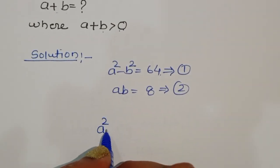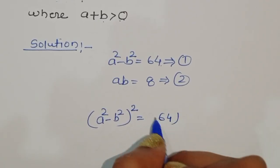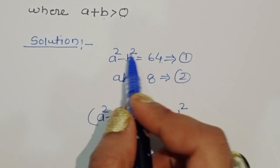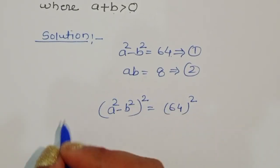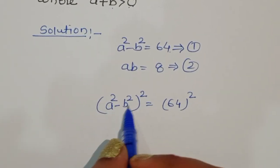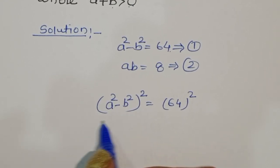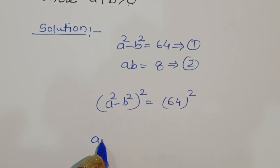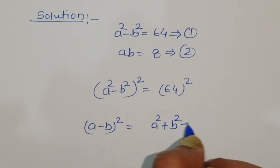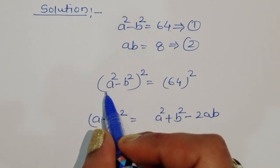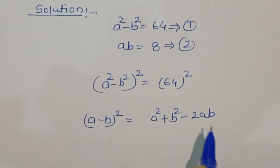We take equation 1 and square both sides: (a² - b²)² = 64². Now, (a² - b²)² expands using the identity (A - B)² = A² + B² - 2AB, so this becomes a⁴ + b⁴ - 2a²b².